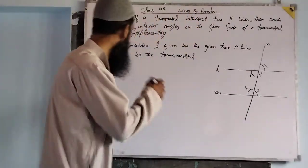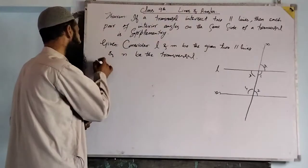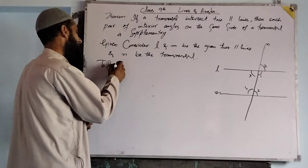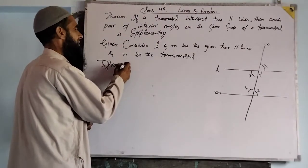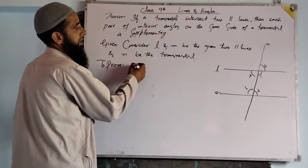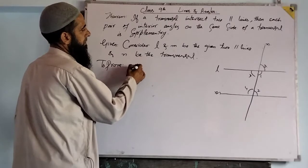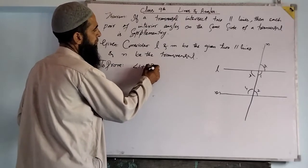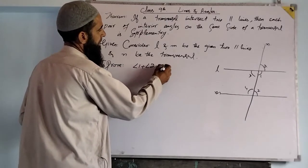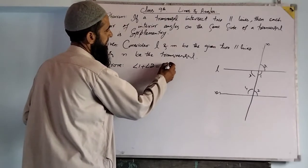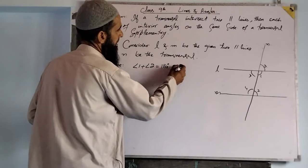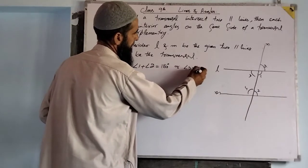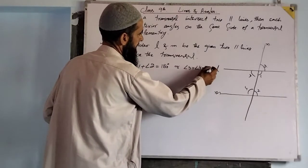To prove: we have to show that angle one plus angle two equals 180, or angle three plus angle four equals 180.